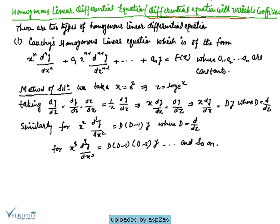This is also called a differential equation with variable coefficients, and it is mainly of two types. The first type is Cauchy's homogeneous linear equation, which is of the form x^n (d^n y/dx^n) + a1 x^(n-1) (d^(n-1)y/dx^(n-1)) + ... + a_n y = f(x), where the coefficients a1, a2, ..., a_n are all constants.